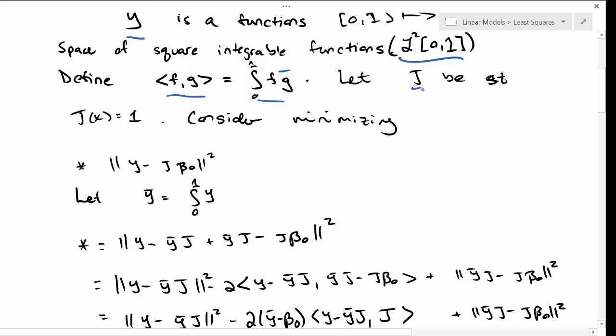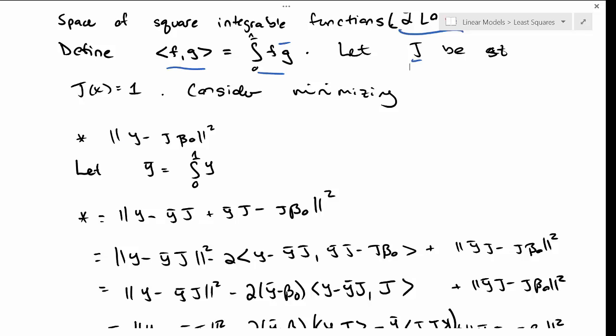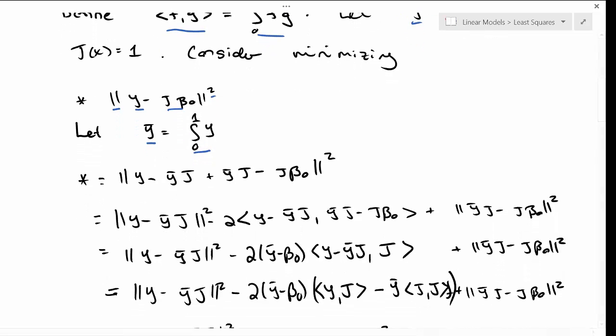Let j be an identity function, a multiplicative identity function. Consider minimizing the norm of our data y minus j times beta_0, where beta_0 is an element of the field, squared. Let y bar just be the integral of our y function from 0 to 1.